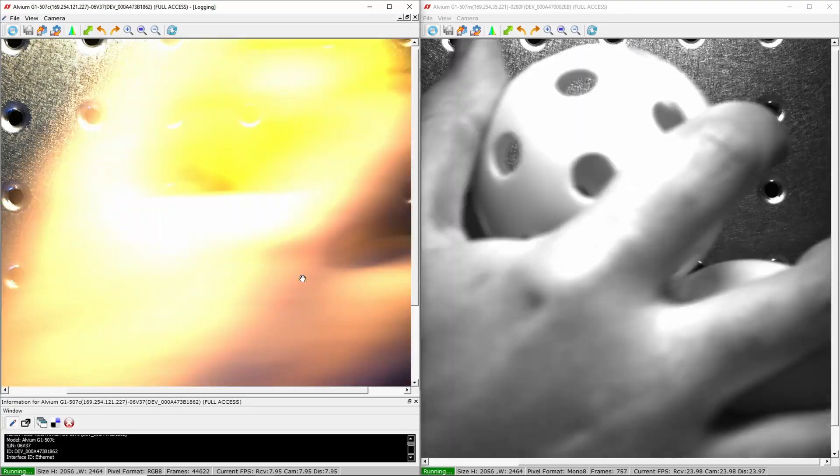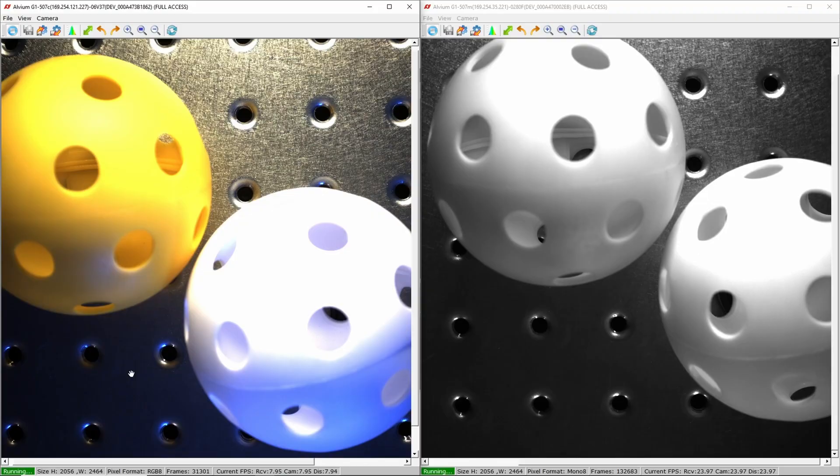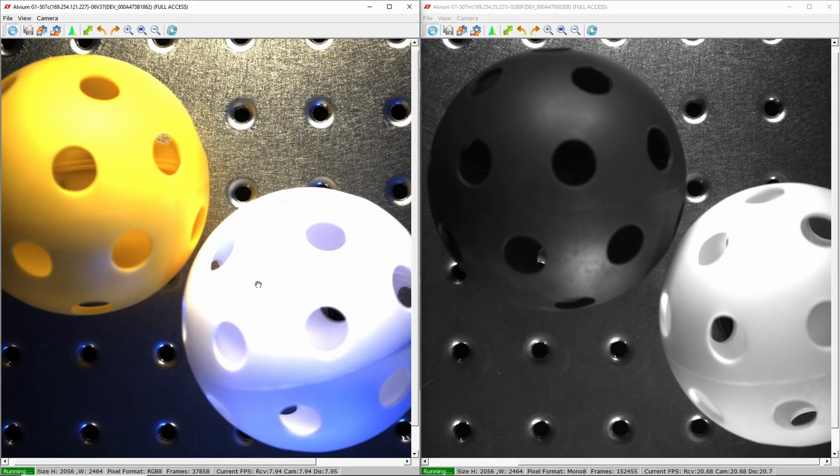When I slide these wiffle balls into frame, you can see we have a bit of a problem. We can discern the difference between the two on the color camera, but on the monochrome camera, the distinction is not as apparent. But add a blue filter, we solve the problem.